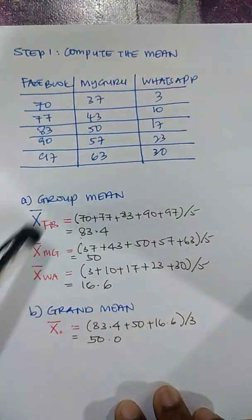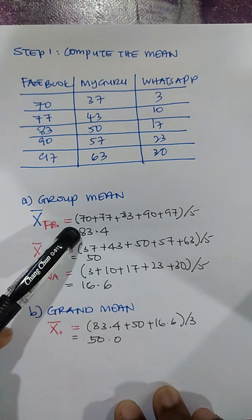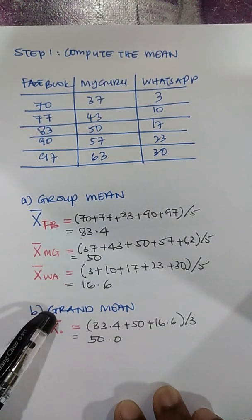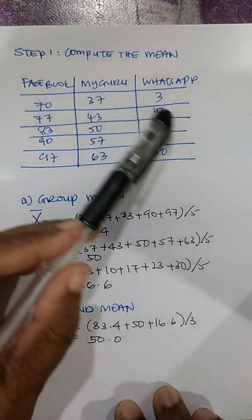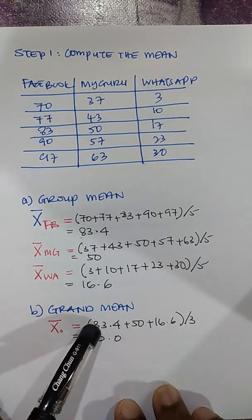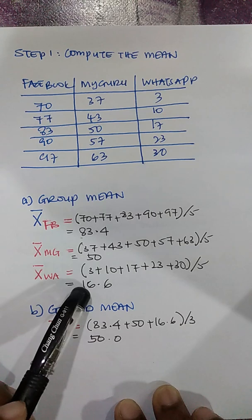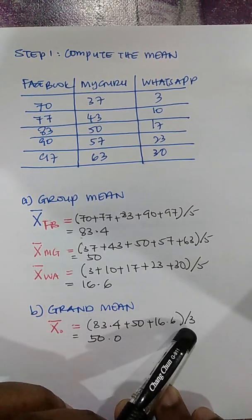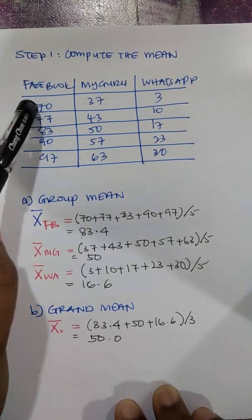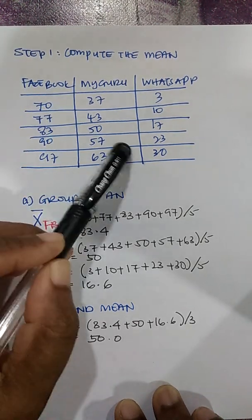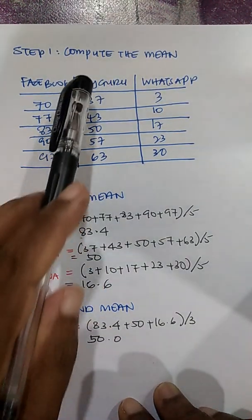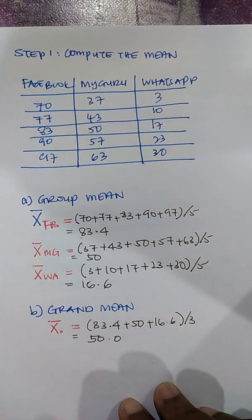I repeat the same step for the MyGuru group and also for WhatsApp, so I get the group mean for each individual group. The second mean to find is the grand mean — the overall average for the entire data. I take the means of the three groups, add them up, and divide by 3 to get 50. I can also get the grand mean by adding every score in the data and dividing by 15, and still get the same value.